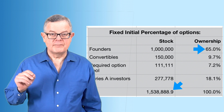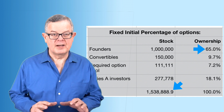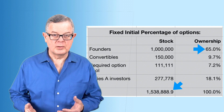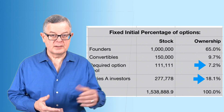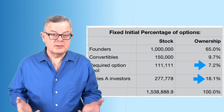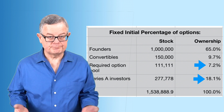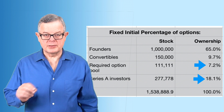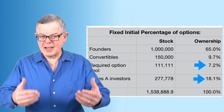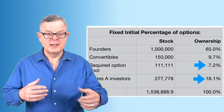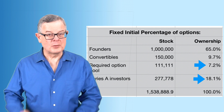The founders have been diluted from 100 percent down to 65 percent. The convertible security holders have 9.7 percent. The option pool got diluted by the convertible securities converting — it's no longer 10 percent, it's 7.2 percent. And the Series A investors got diluted as well — they don't have 20 percent; they have 18.1 percent. This is a very common approach where the dilution from convertible securities is shared by both the founders and the Series A investors.